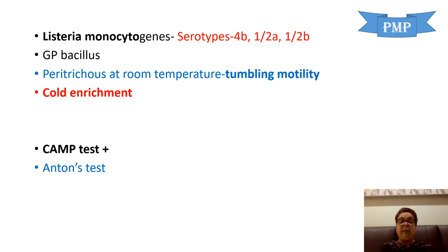Another important characteristic: Listeria monocytogenes gives a positive CAMP test — enhanced zones of hemolysis are produced when Listeria colonies are streak-inoculated perpendicular to Staph aureus inoculation. The hemolysins of both Staph aureus and Listeria synergize to produce enhanced zones of hemolysis. It also gives the Anton's test positive, which is similar to the Sereny test done for Shigella or enteroinvasive E. coli — keratoconjunctivitis seen in a guinea pig or rabbit.